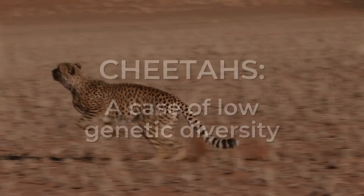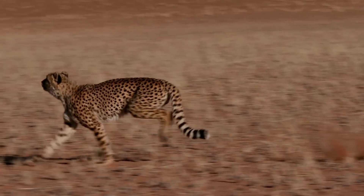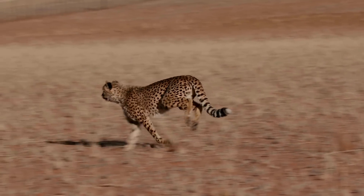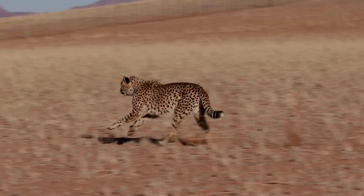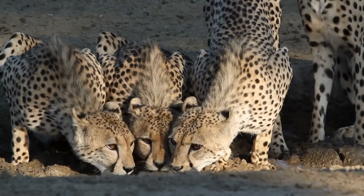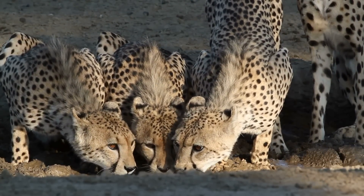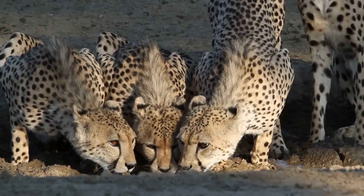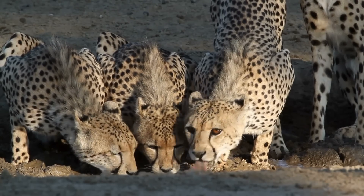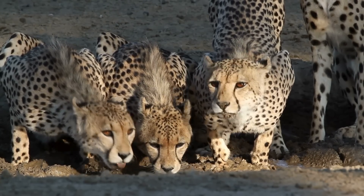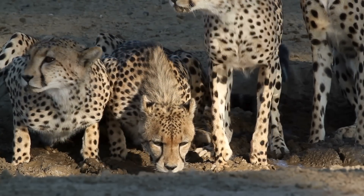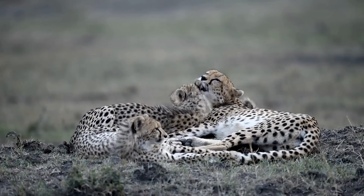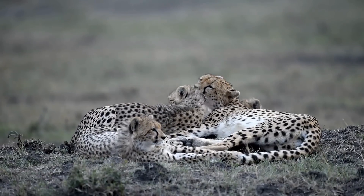Conversely, low genetic diversity limits a species' ability to adapt, leaving it vulnerable. Take cheetahs, for example. These speedy cats are incredible athletes, capable of going from zero to 60 miles per hour in just three seconds. However, population bottlenecks have drastically reduced their genetic variation, leaving them almost genetically identical. This means cheetahs are vulnerable to diseases and environmental changes — a single virus or habitat disruption could have catastrophic consequences for the species.